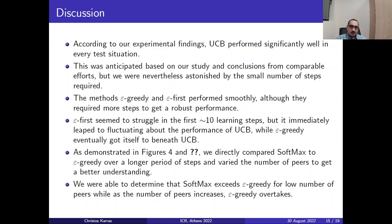Some discussion about the experimental findings. According to what we observed, the UCB algorithm performed significantly well in every test scenario. This was anticipated based on our study and conclusions from other studies. But it's surprising the small number of time steps it required. The methods epsilon greedy and epsilon first performed smoothly. Both of them. Although they required more time steps to reach a robust performance. ε-first seemed to struggle in the first 10 learning steps as we previously said, but then it immediately reaches a performance similar to UCB. Approximately after 10 learning steps and then the performance is steady.